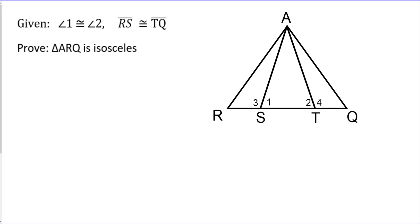We've got a couple of proofs here. We're going to take a look at proving that a triangle is isosceles, using something called CPCTC and what we know about isosceles triangles. Marking it on the picture is usually the best way to go.